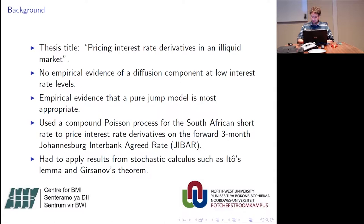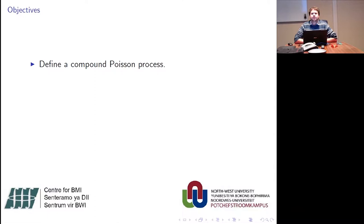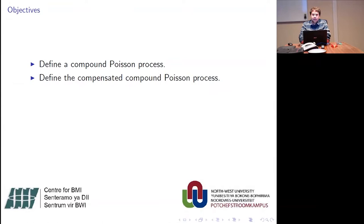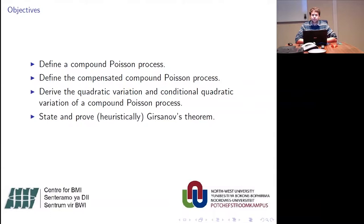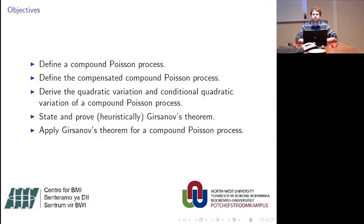The objectives of this seminar are: firstly, to define a compound Poisson process; to define the martingale known as a compensated compound Poisson process; to derive the quadratic variation and conditional quadratic variation for a compound Poisson process; to state and prove Girsanov's theorem heuristically; to apply Girsanov's theorem for a compound Poisson process; and to discuss the implications of these results on model calibration for the short rate.